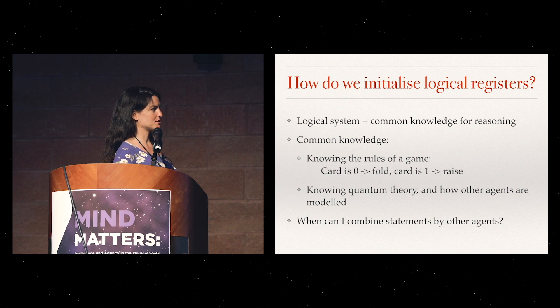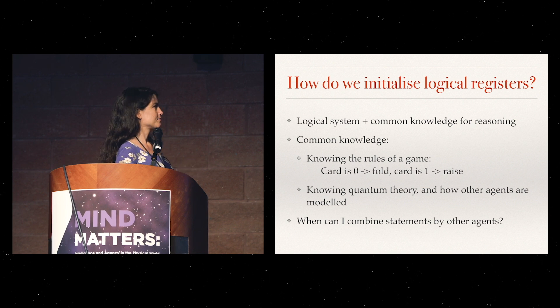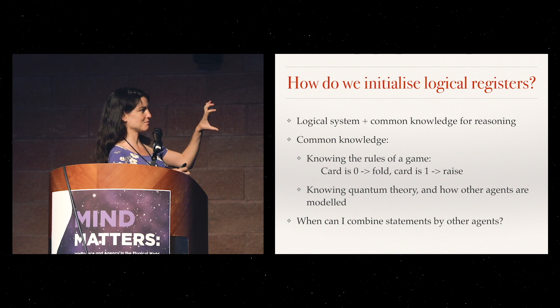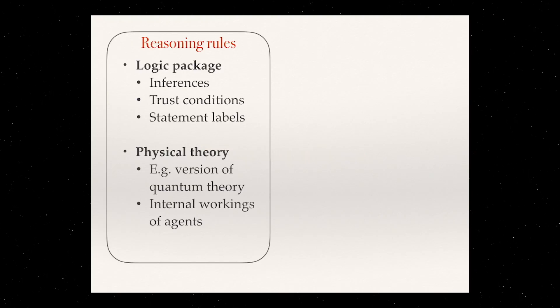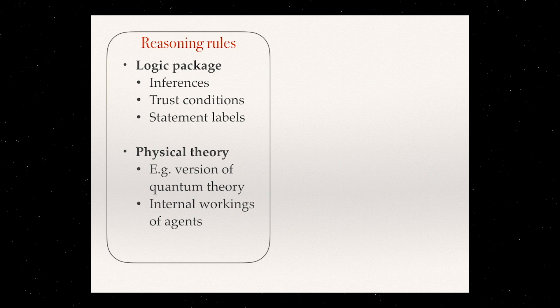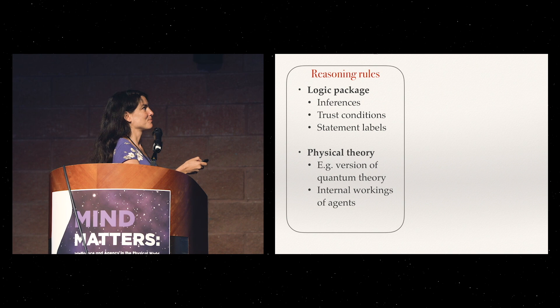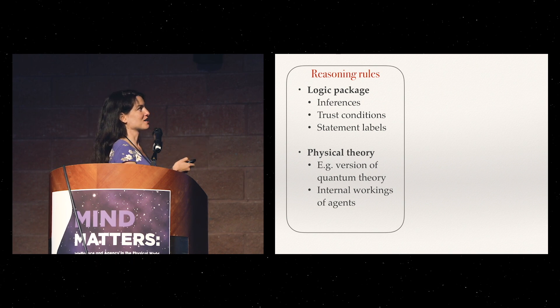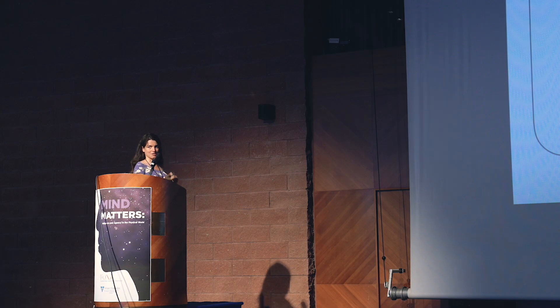The other ingredient that I will not go so much into here is the idea of when can I combine statements made by other agents. What are the rules for considering another system just some memory or taking the prediction seriously? What we're doing is building this whole software package, which has three ingredients. The first one is everything that is the reasoning rules that we can change. It's like conditions to make inferences, to trust other people, and also what kind of labels should go into some statements like, I make a prediction, but this prediction is only valid between these two times, for example.